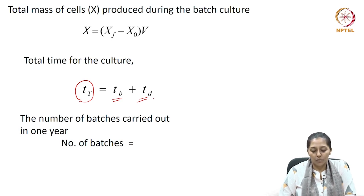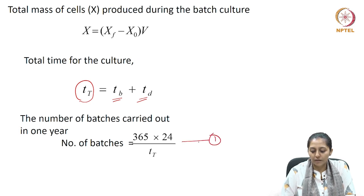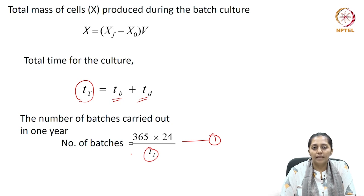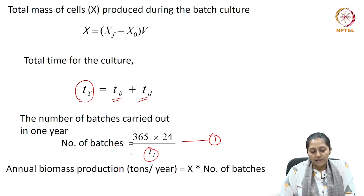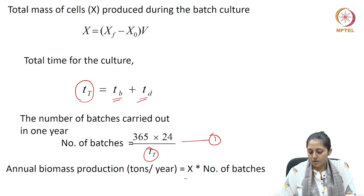The number of batches which can be carried out in one year is calculated as 365 days times 24 hours per day, divided by the total time T. This gives the total number of batches in a year. The annual biomass production is then the biomass produced in one batch multiplied by the total number of batches possible in a year.